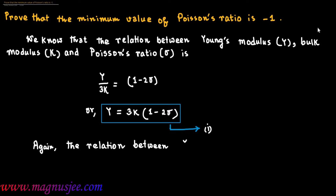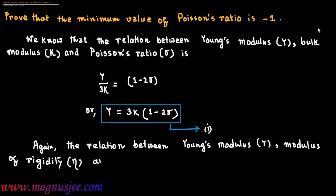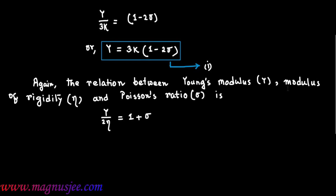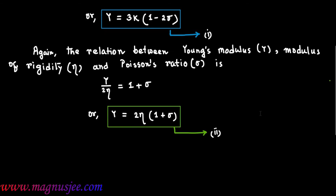Again, the relation between Young's modulus Y, modulus of rigidity eta, and Poisson's ratio sigma is given by: Y divided by 2 eta equals 1 plus sigma, or Y equals 2 eta into (1 plus sigma). This is equation 2.